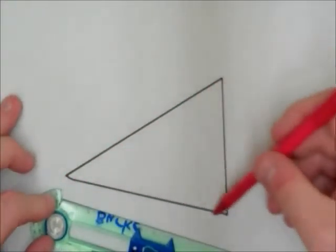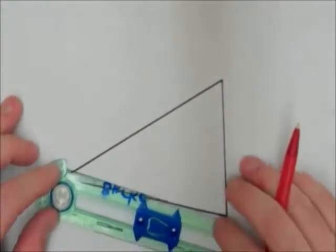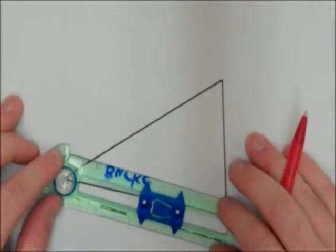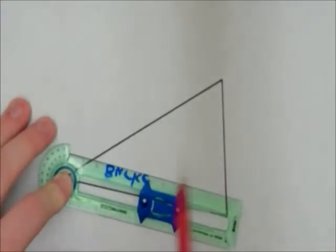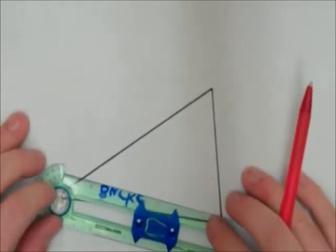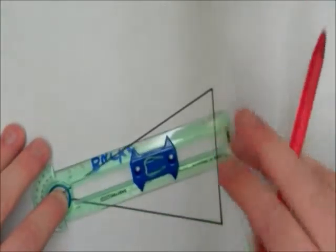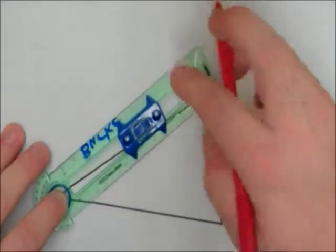So I'm going to do the perpendicular bisector of this segment and this one, and that should find my circumcenter. As you recall, a perpendicular bisector is found by putting the point of your compass on the endpoint of the segment, and then open up the compass more than halfway.